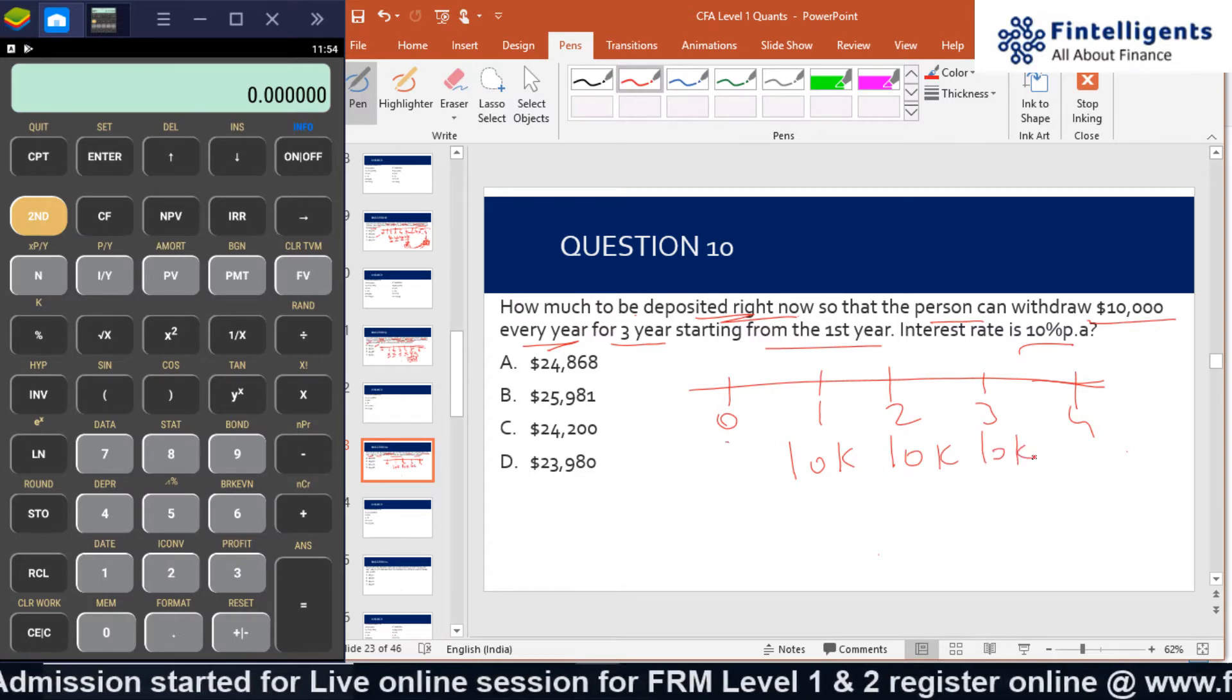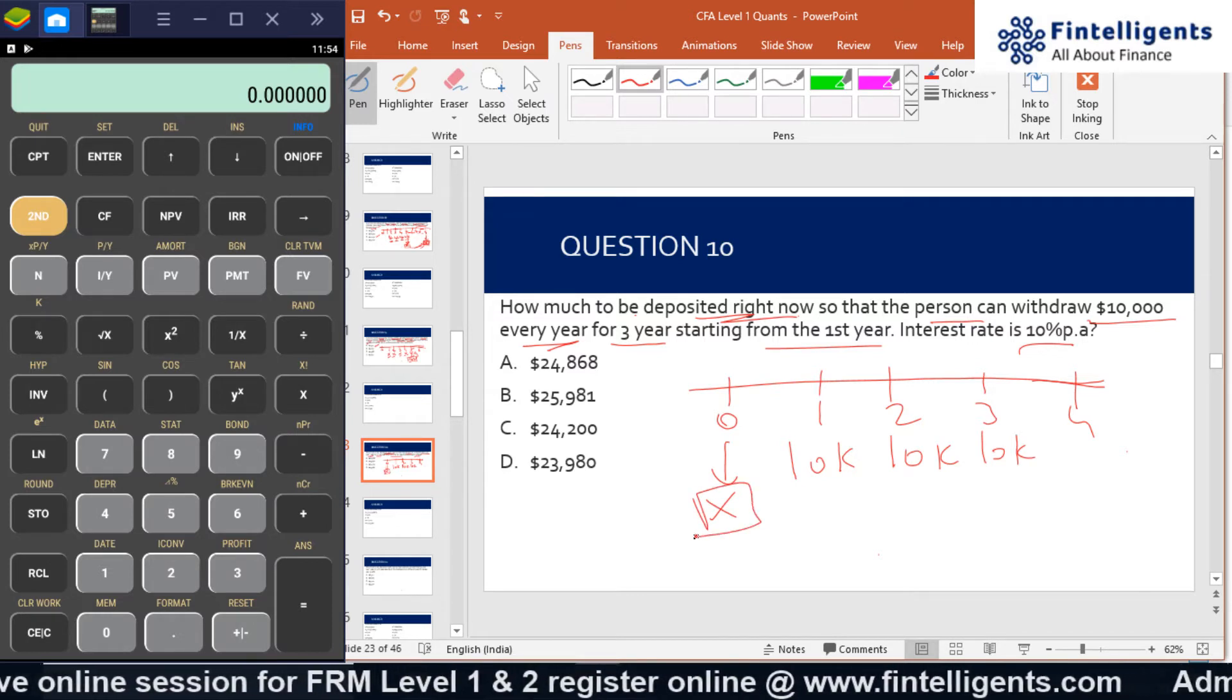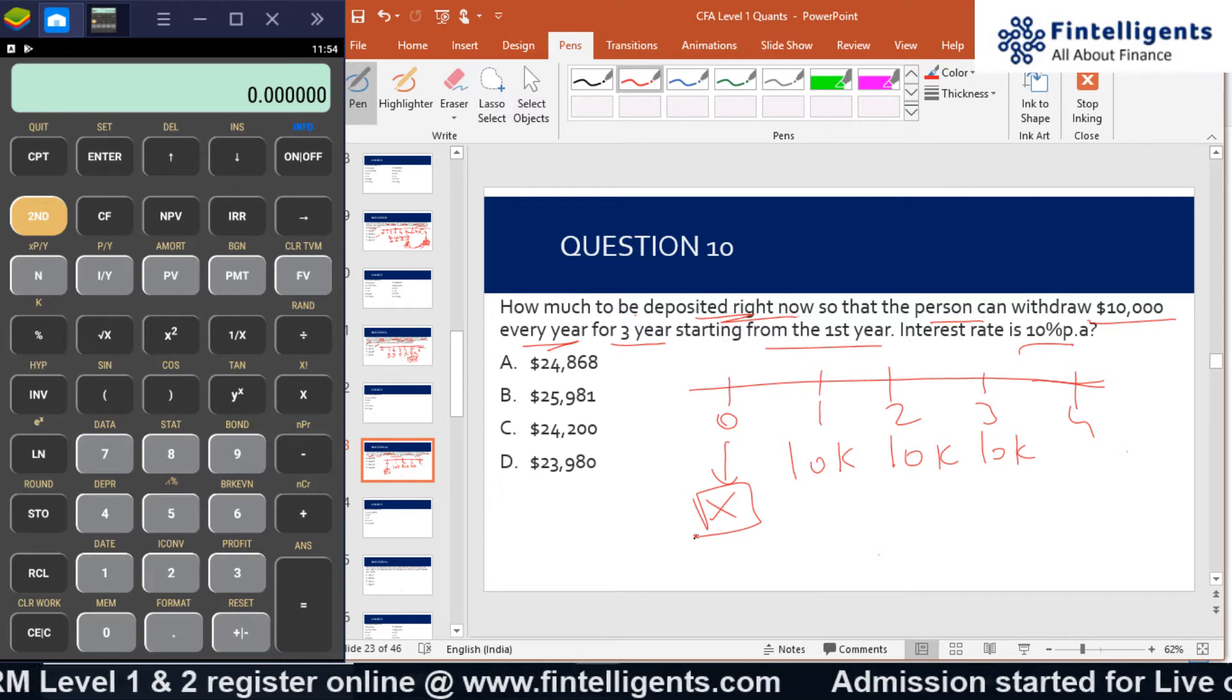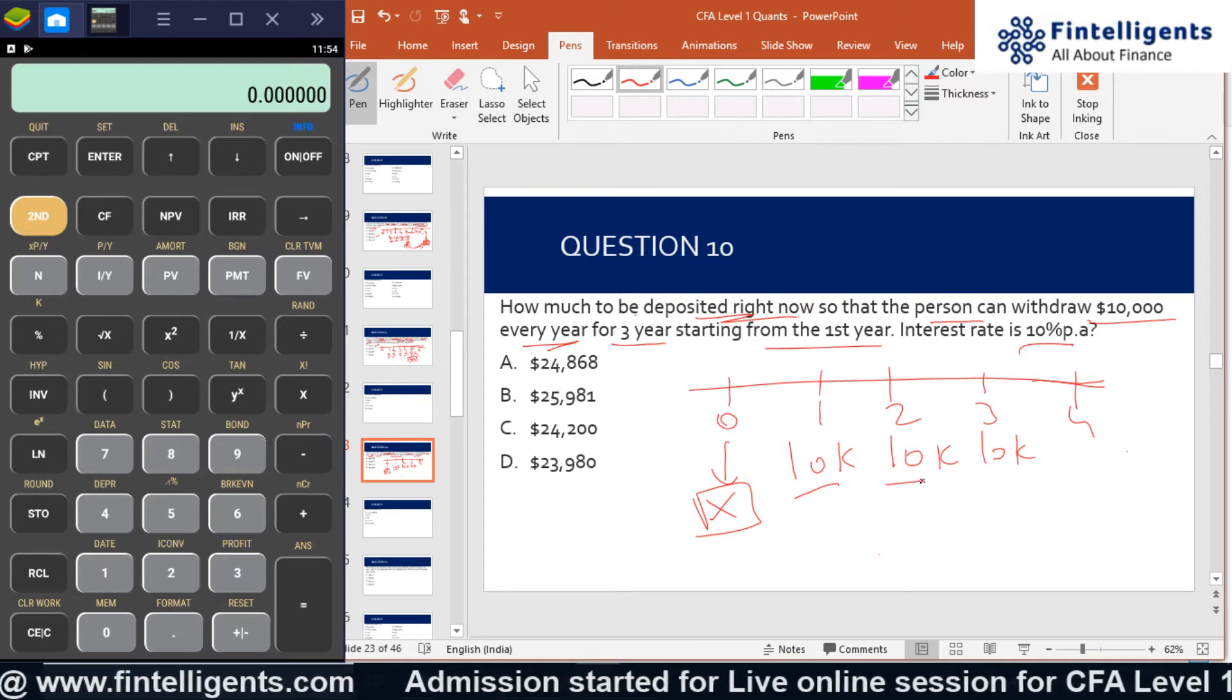What is the amount that needs to be deposited right now? This question is given specifically because whenever we find the present value of a PMT—a fixed cash flow—the calculator will always give us the answer one year before the first timeline.